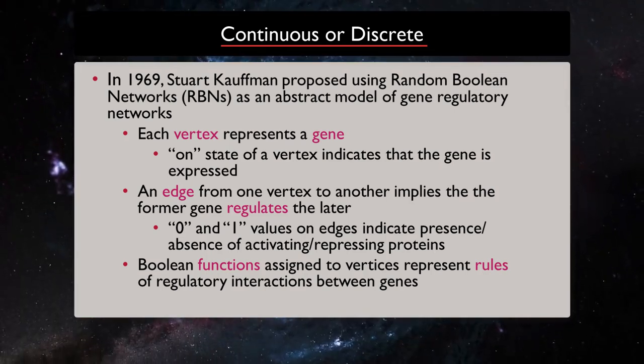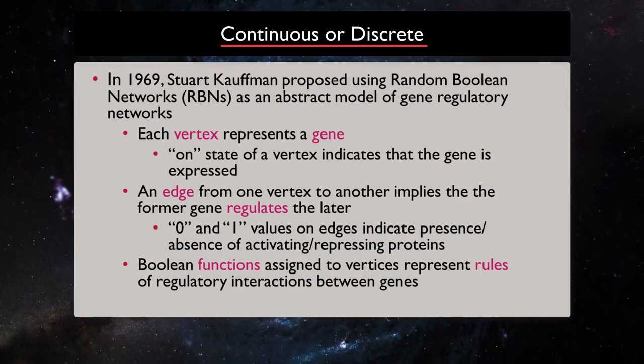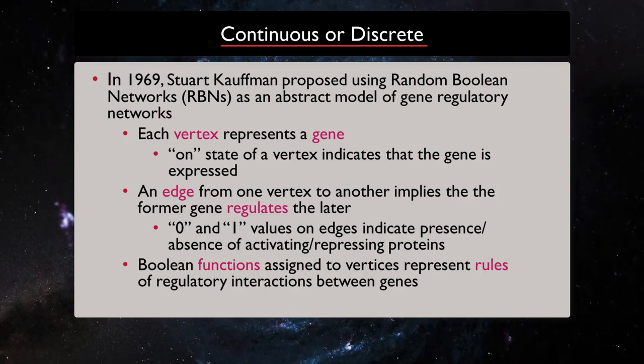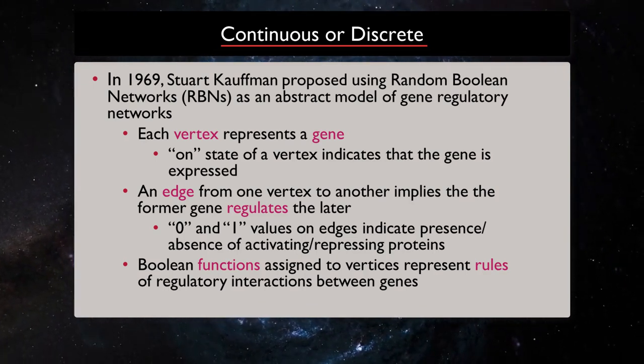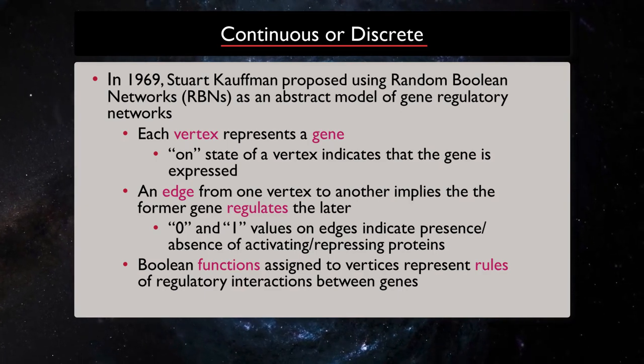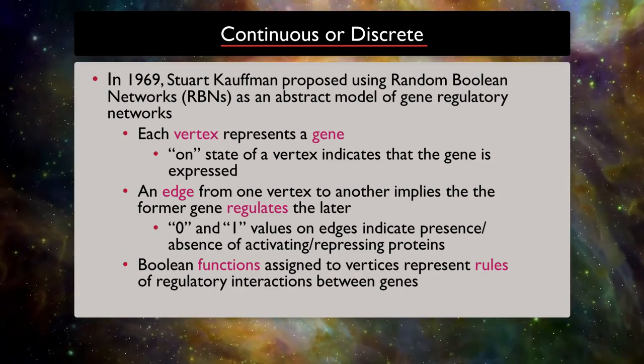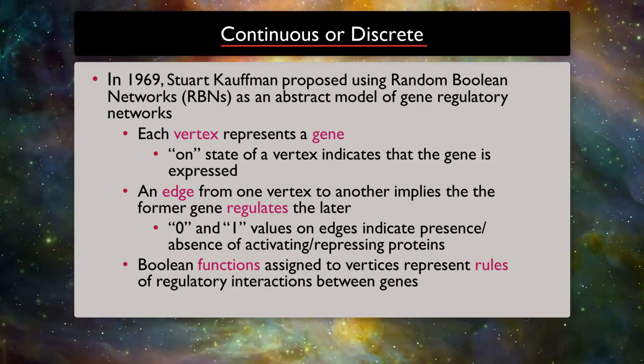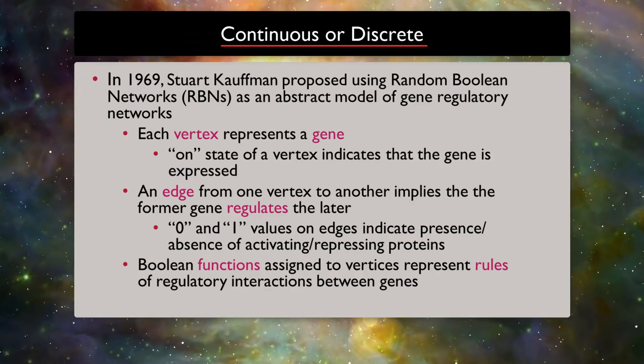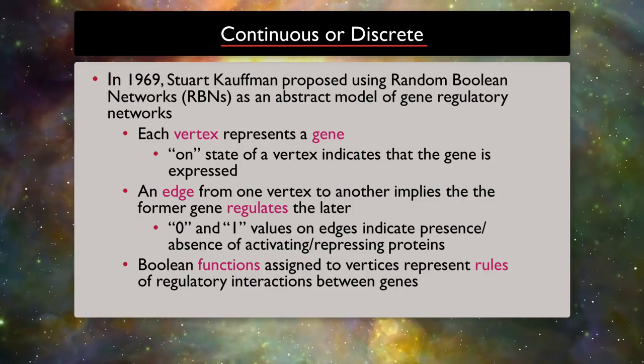A link from one vertex to another implies the former gene regulates the latter, and 0 or 1 values on edges indicate presence or absence of activating or repressing proteins. Boolean functions assigned to nodes represent the rules of regulatory interaction between genes.